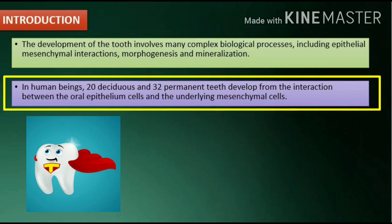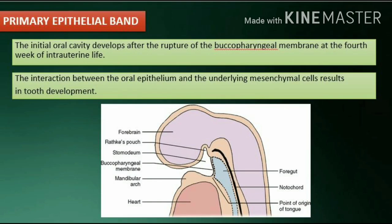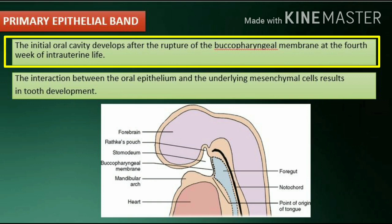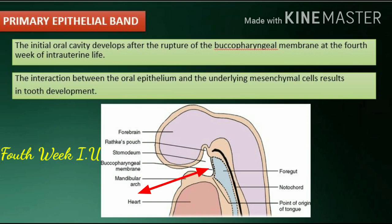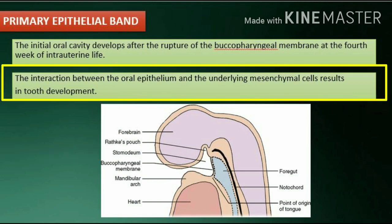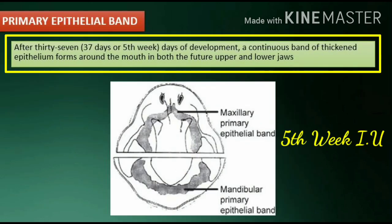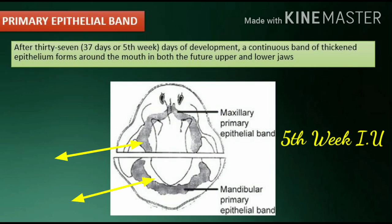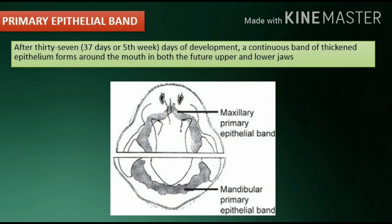In human beings, 20 deciduous and 32 permanent teeth develop from the interaction between the oral epithelium cells and the underlying mesenchymal cells, forming the primary epithelial band. The initial oral cavity develops after the rupture of the buccopharyngeal membrane at the fourth week of intrauterine life. After 37 days, or the fifth week of development, a continuous band of thickened epithelium forms around the mouth in both the future upper and lower jaws. These bands of epithelium are roughly horseshoe-shaped structures.